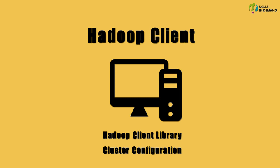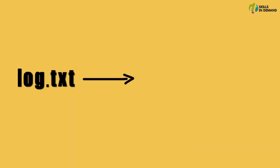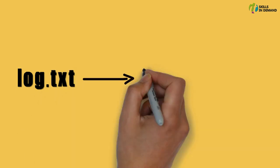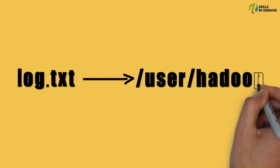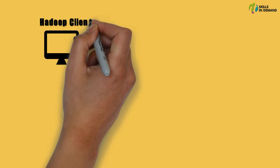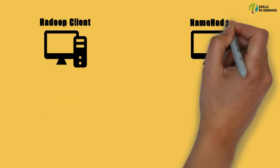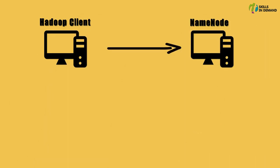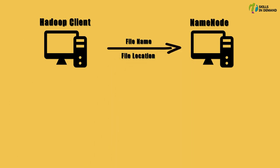Let us assume the client wants to read a file named log.txt, which is located within the folder /user/hadoop. The client would begin the read process by contacting the name node and specifying the name and location of the file it would like to read.